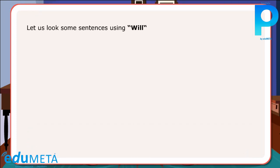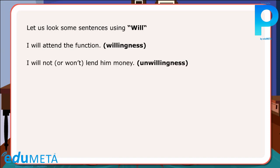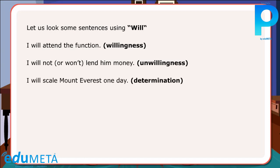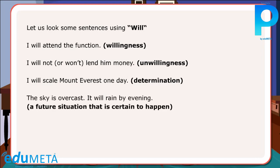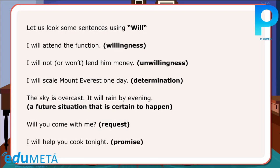Let us look at some sentences using will: I will attend the function — willingness. I will not — or won't — lend him money — unwillingness. I will scale Mount Everest one day — determination. The sky is overcast; it will rain by evening — a future situation that is certain to happen. Will you come with me? — request. I will help you cook tonight — promise.